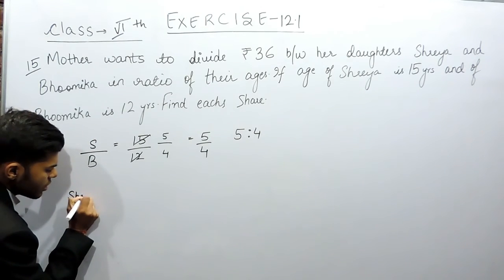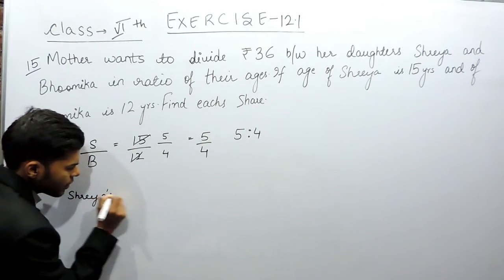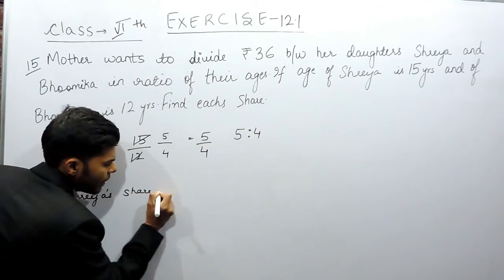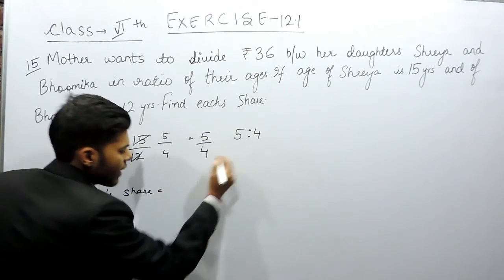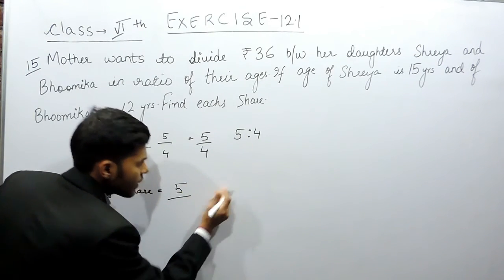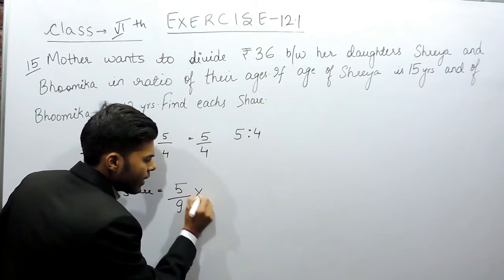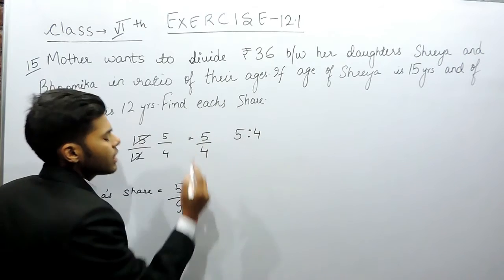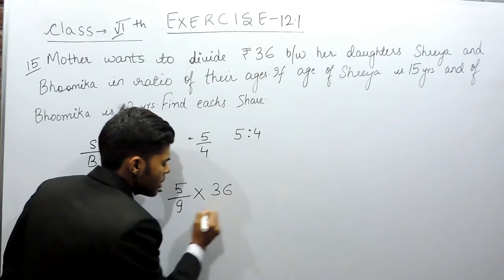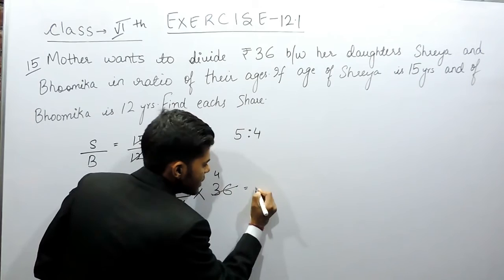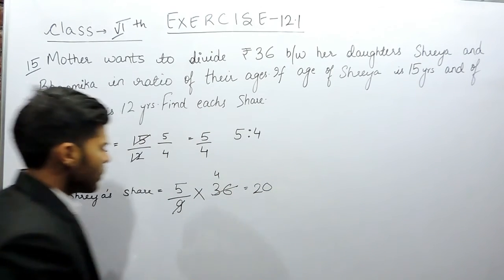So Shreya's share will be 5 out of the total - the total of their ratio is 9 - multiplied with 36. So 4 times 36, that means Shreya will get 20 rupees.